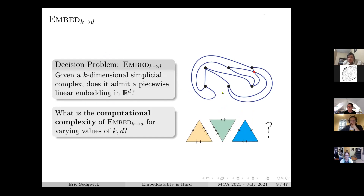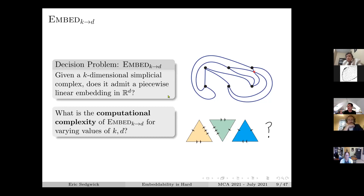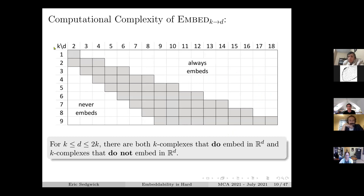The decision problem Embed(k,d) is the following: given a k-dimensional simplicial complex, does it admit a piecewise-linear embedding into R^d? So k is the dimension of the complex, d is the dimension of the ambient space. Working with computer scientists, what they're really interested in is the computational complexity of that problem - how hard is it to compute?